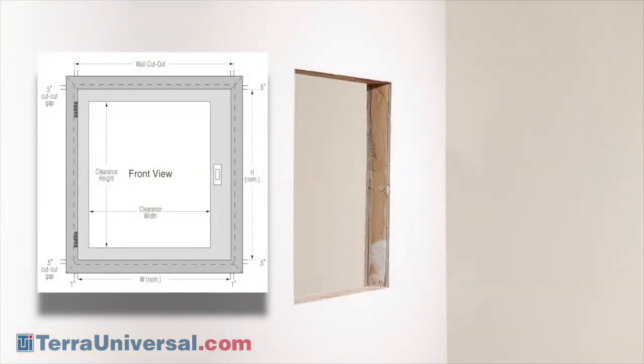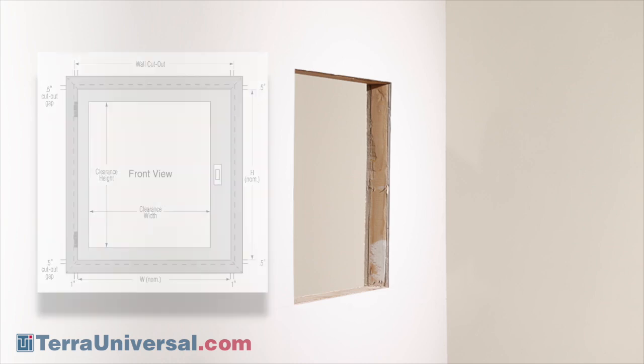Before you start, prepare a framed cutout that is two inches wider and one inch higher than the nominal width and height of the Clean Seam Plus chamber. To minimize disruption of your clean room, you can enclose this area with plastic sheeting to contain wall dust and debris.